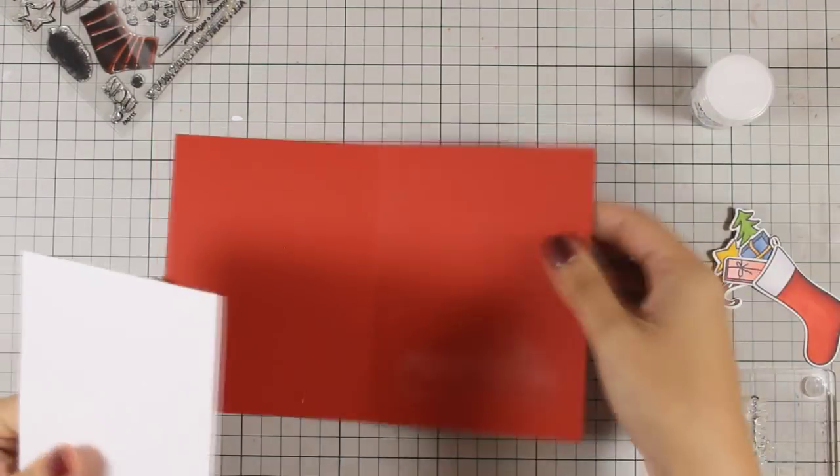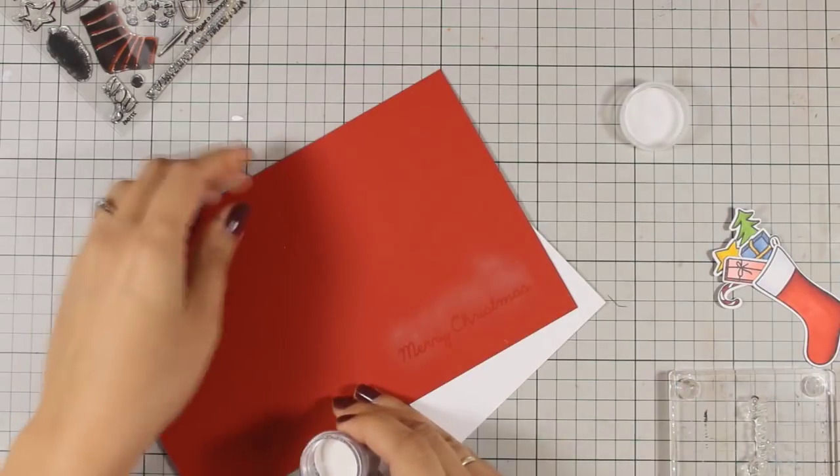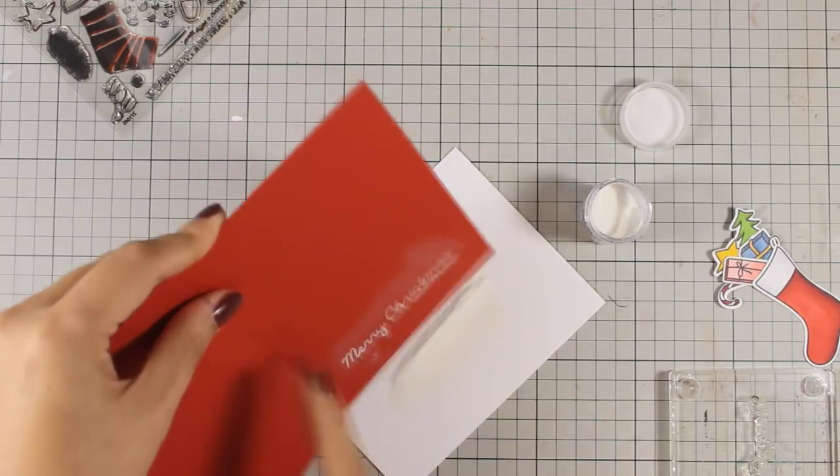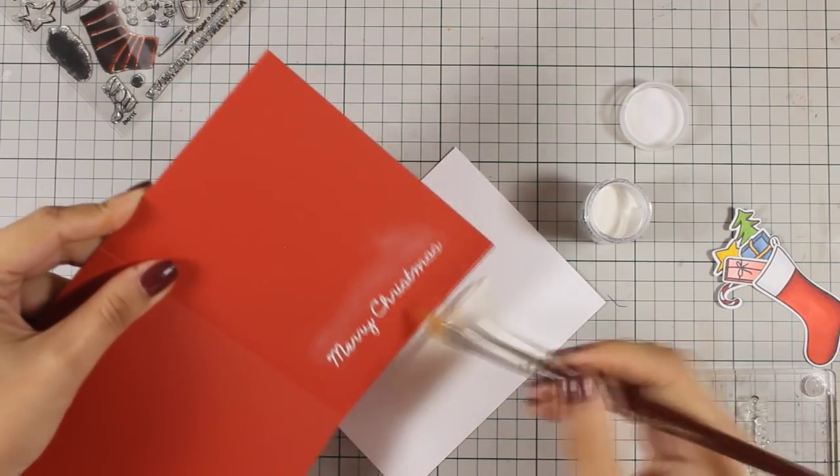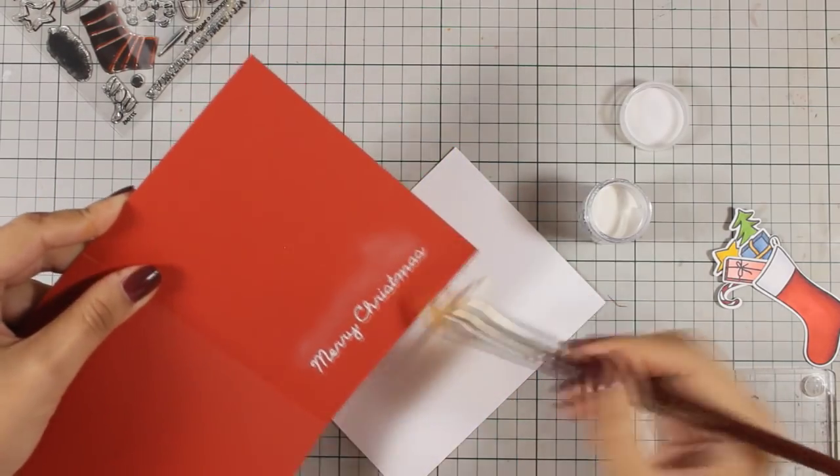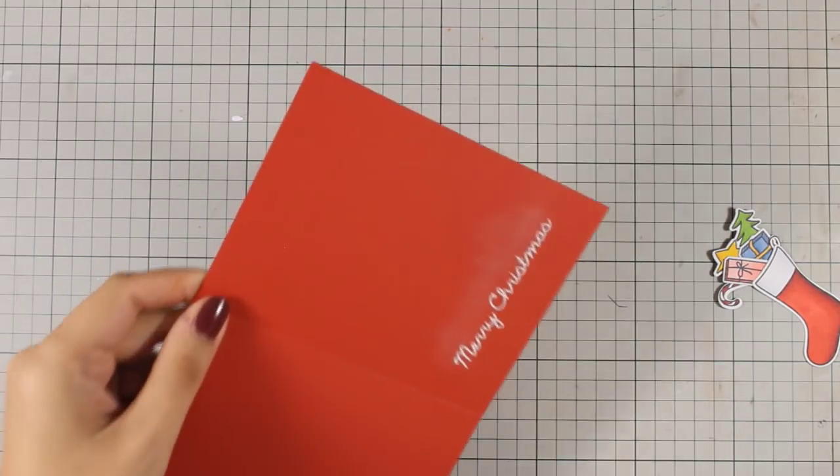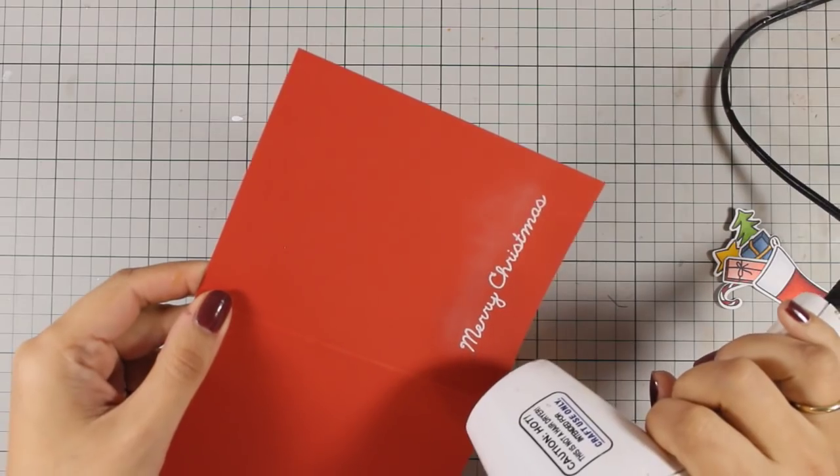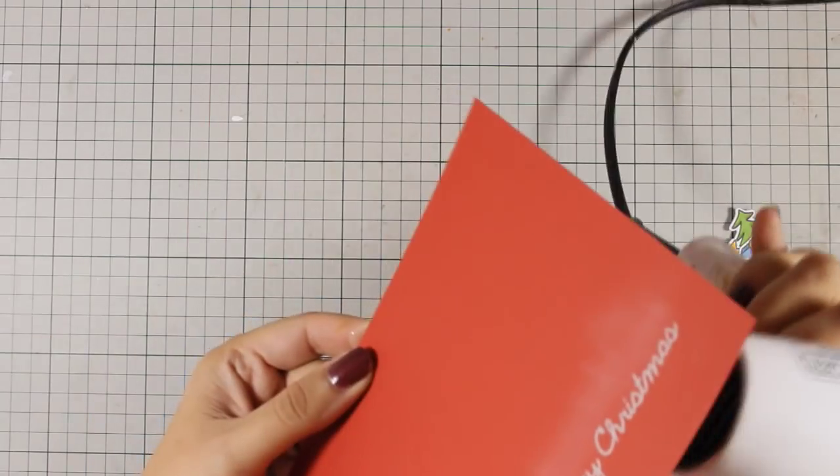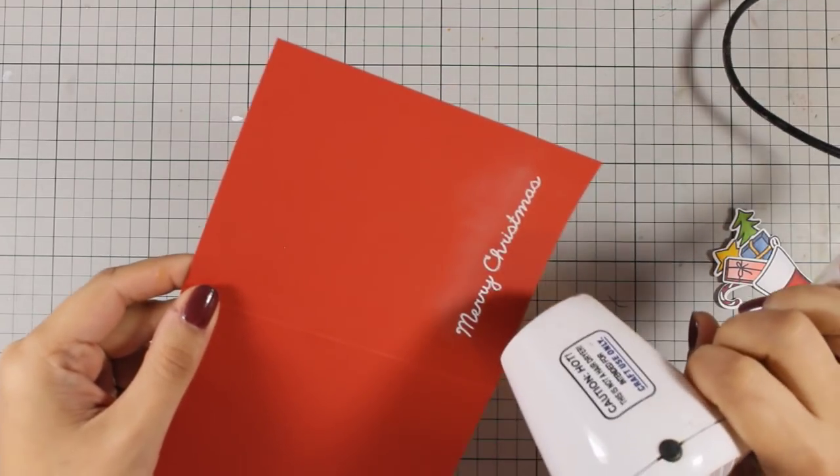My card base for today is a standard card that's four and a quarter by five and a half. It is side folded and I have used red cardstock for my card. I really love using traditional Christmas colors for my Christmas cards. And actually this is my favorite season of the year when it comes to card making, because making Christmas cards is really my favorite.